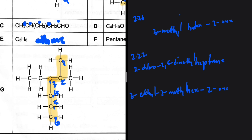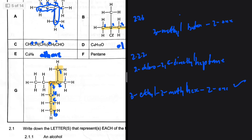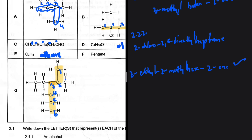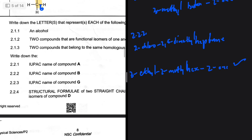Alphabetical order is important when organizing branches. Let's verify: six carbons — hex; double bond on the second carbon; a methyl branch on the second carbon; an ethyl branch on the third carbon. The correct IUPAC name is 3-ethyl-2-methylhex-2-ene.